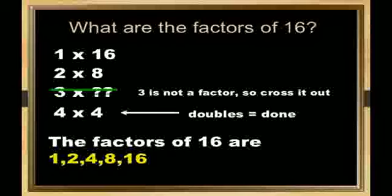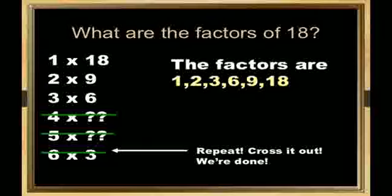When we multiply by 3, we didn't get any number by which we get 16, so 3 is not our factor. Now we multiply by 4, so 4 times 4 equals 16. We get doubles, so the factors of 16 are 1, 2, 4, 8, and 16.